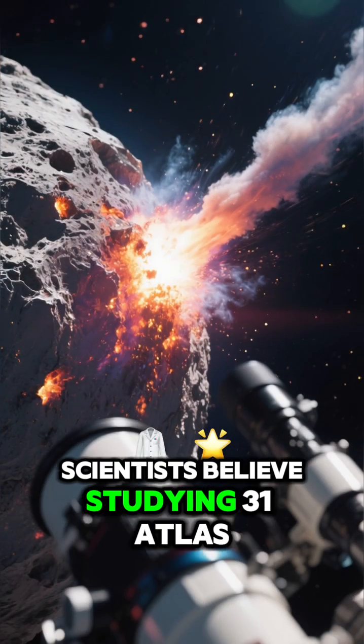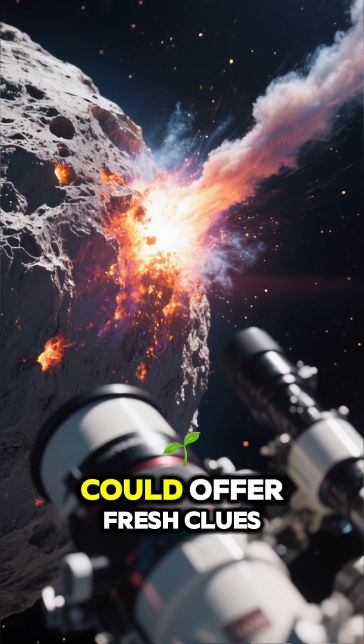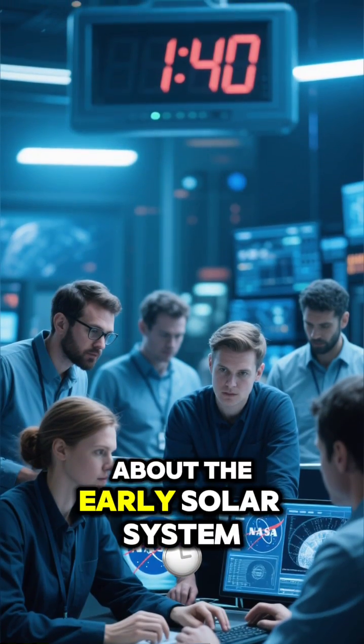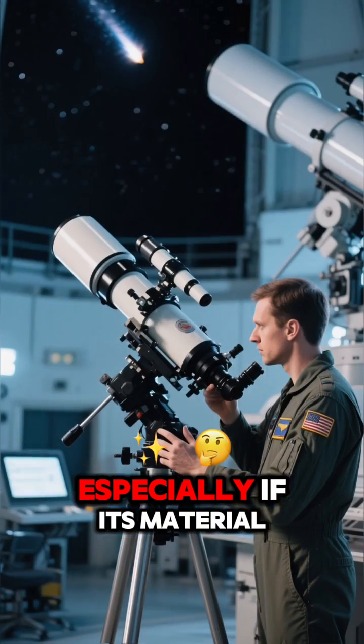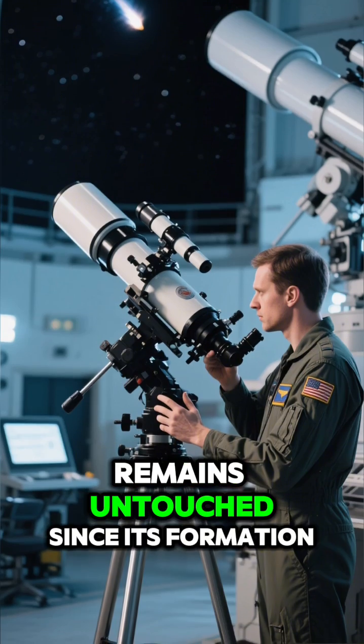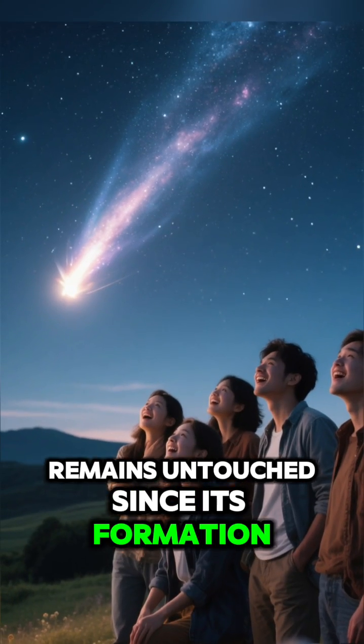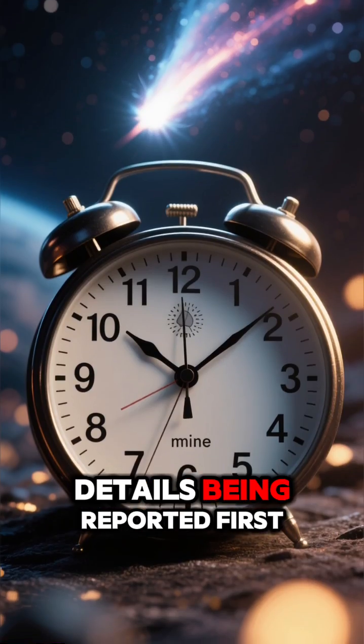Scientists believe studying 31 Atlas could offer fresh clues about the early solar system, especially if its material remains untouched since its formation. Here are the key details being reported.